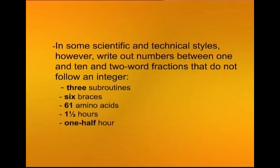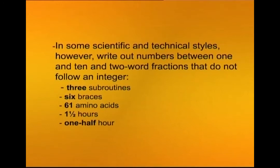In some scientific and technical styles, however, you will write out numbers between one and ten, and one-word fractions that do not follow an integer. If you need to begin a sentence with a number, spell it out or reword the sentence if possible. It is better to reword so that the number does not come at the beginning. For example, instead of '32 workstations were provided by the university,' say 'The university provided 32 workstations.'